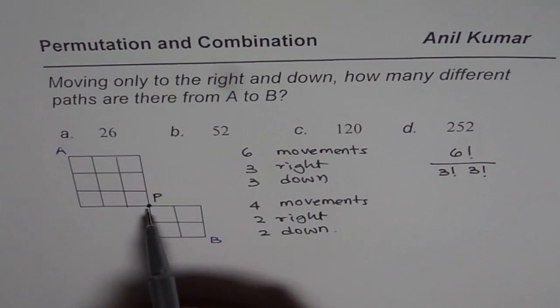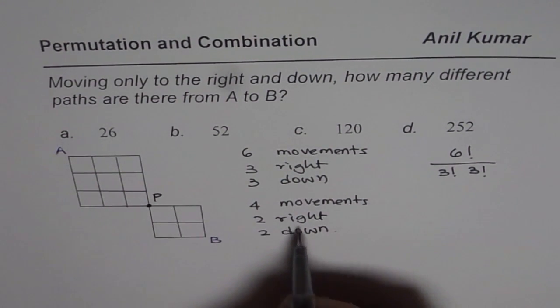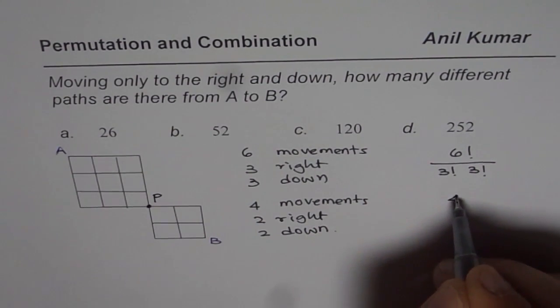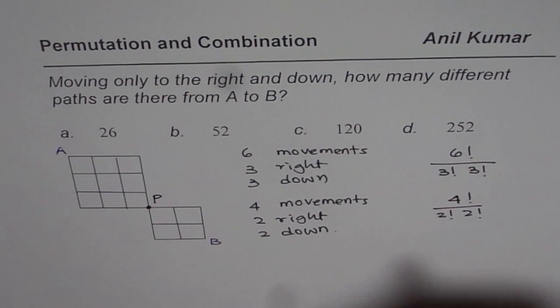Now, it is two right—you can go from here also—1, 2 right, do you see that? Or two down, two down, anywhere. So these are the same kind of movements. Therefore, the options here are 4! divided by 2! × 2!.